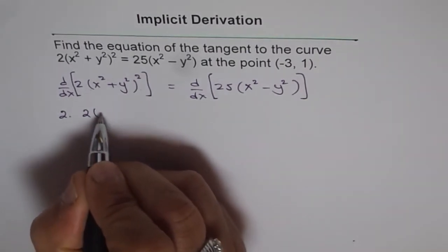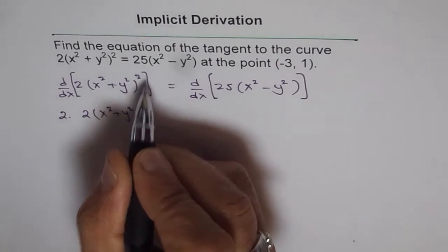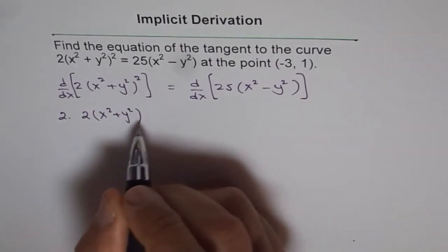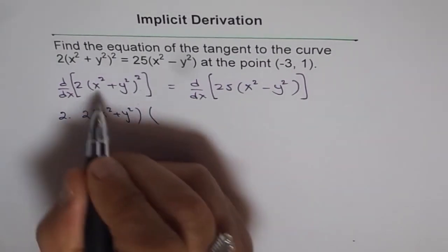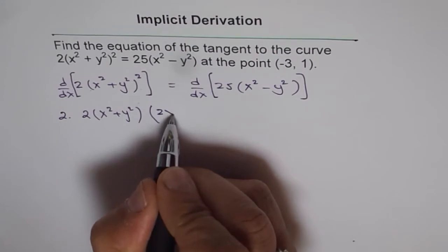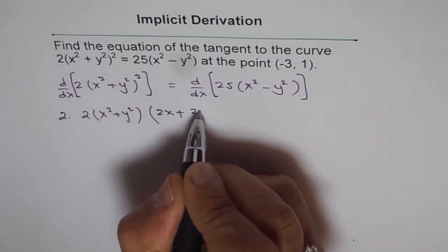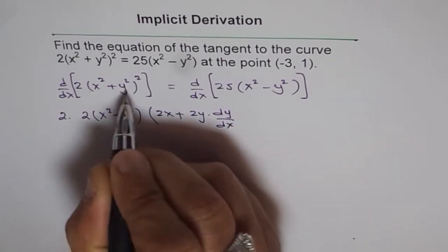Now for the derivative of this function, it will be 2 times (x² + y²)^(2-1), which is 1, times the derivative of the inside function. We're doing chain rule. So inside function with respect to x is 2x for x² plus 2y dy/dx for y².